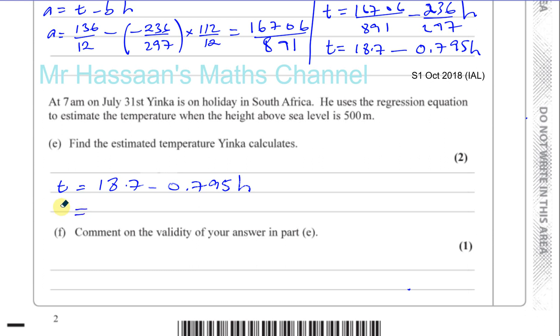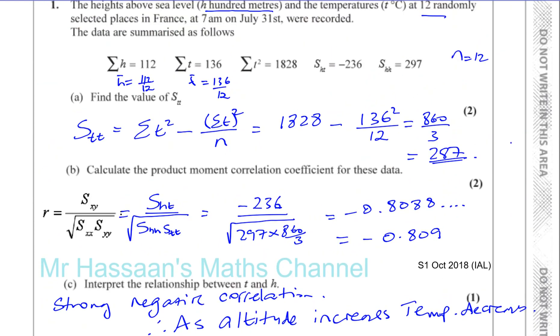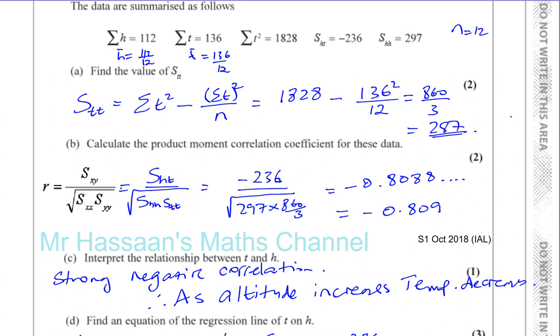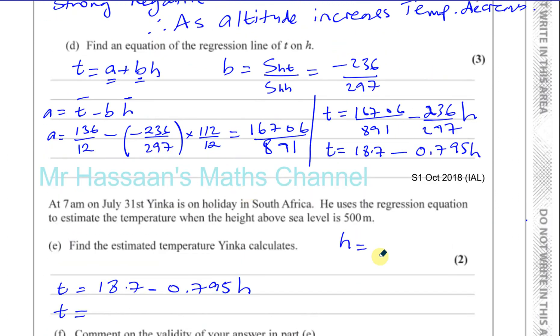Now, you've got to be really careful here. This is like a question designed for you to lose marks in because most people would think H is 500 meters. However, if you go back to the beginning of the question, right at the start, it says H is in 100 meters. So H is measured in 100 meters. So 500 meters means H is equal to 5, not 500, because H is measured in 100 meters.